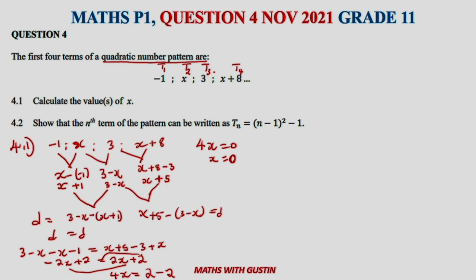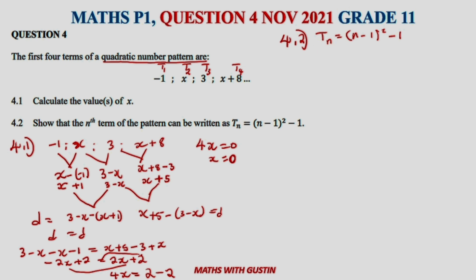Now 4.2 says: show that the nth term of the pattern can be written as the given expression. The tn formula given is n squared minus 2n plus... let me correct that — it's n squared minus one. Let's go back to our pattern and substitute x equals zero.